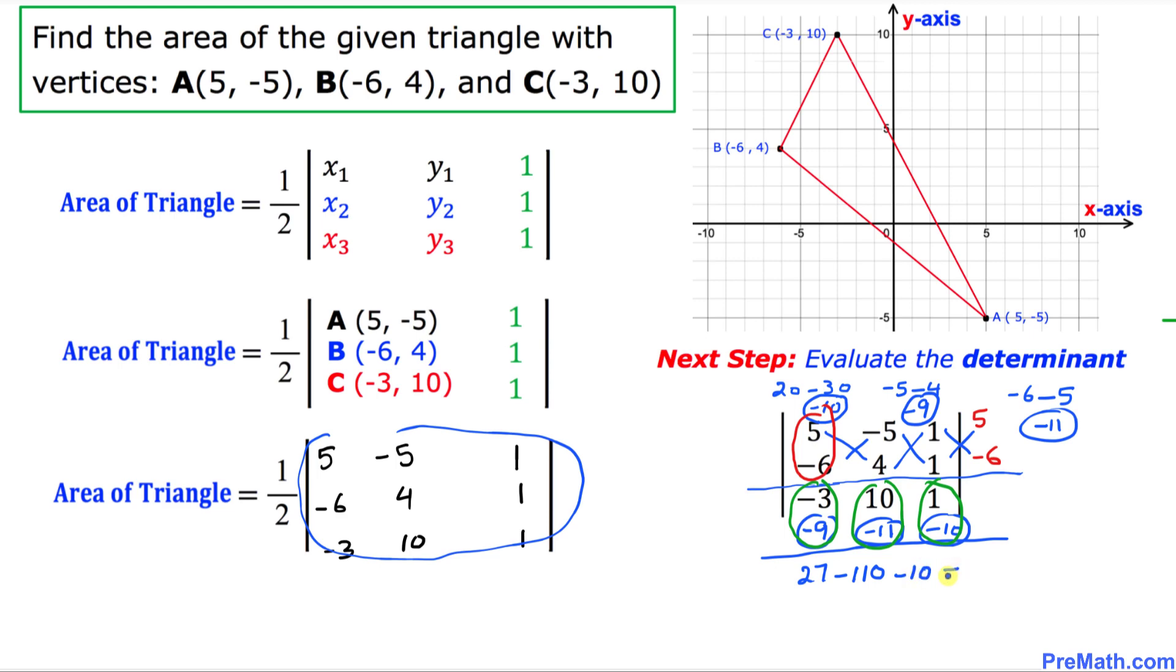And if we add them together, if we simplify them, that is going to give us negative 93.